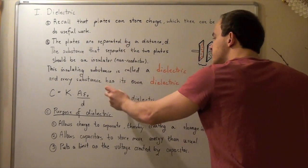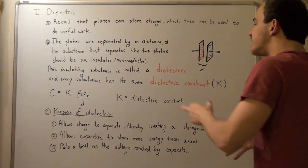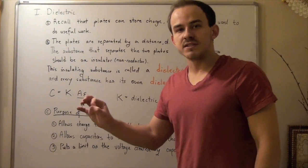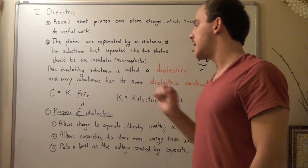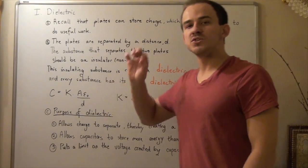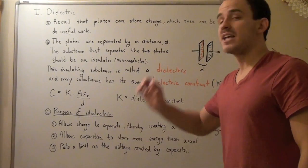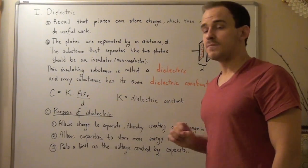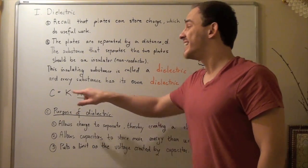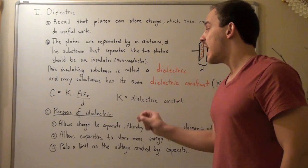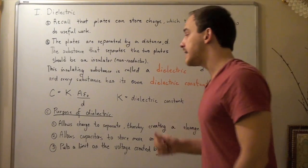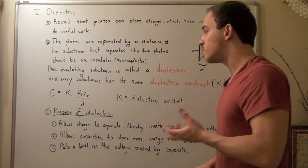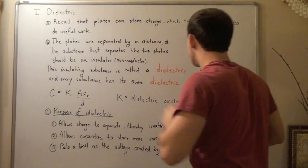Every substance has its own specific dielectric constant — a value that relates to that substance and the atoms that compose it. And we saw that when we spoke about capacitance, the capacitance of a parallel plate capacitor is given by the following equation: capacitance equals the dielectric constant K times the area of our plate times epsilon naught, a constant that depends on Coulomb's constant, divided by the distance between the plates.